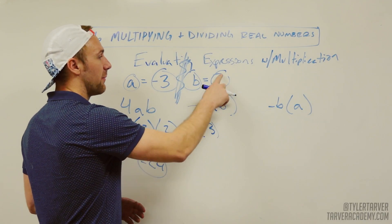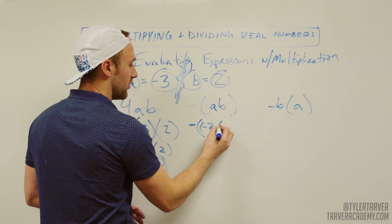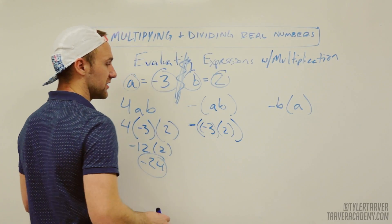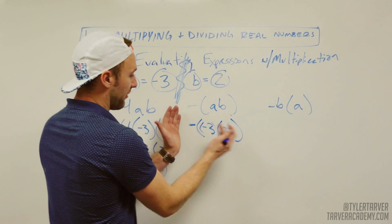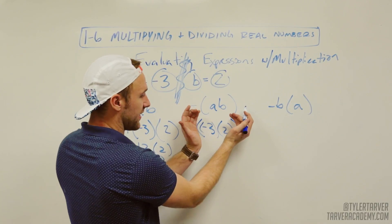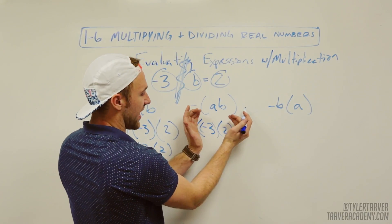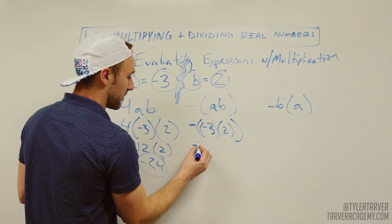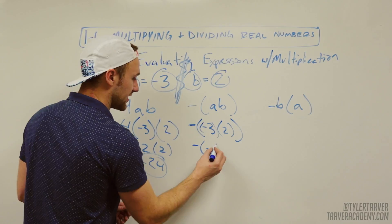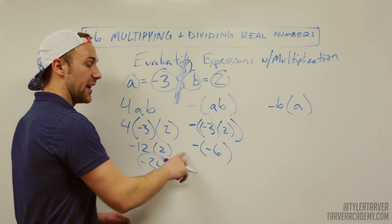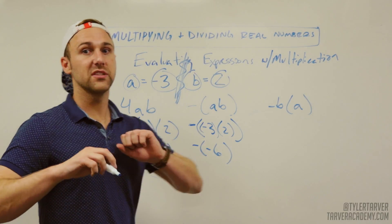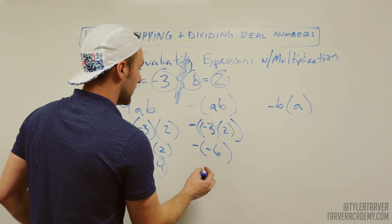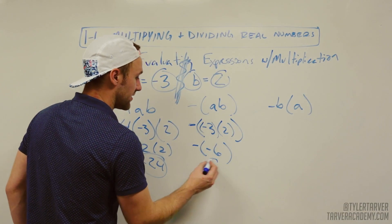Then B, I'm going to replace with 2. Now before I get to that negative out front, I'm going to do what's in the parentheses first. So negative 3 times 2 is negative 6. I'm going to keep all my signs still there. A negative times a negative equals a positive, so it's positive 6.